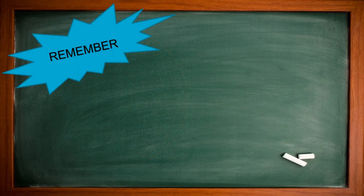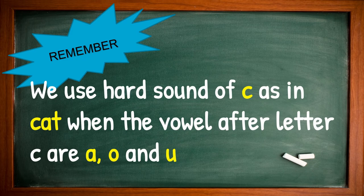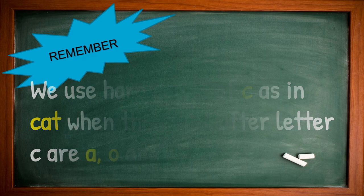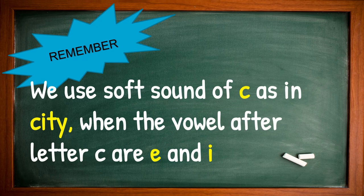Always remember children that we use the hard sound of C as in cat when the vowel after letter C are A, O, and U. While we use the soft sound of C as in city when the vowel after letter C are E and I.